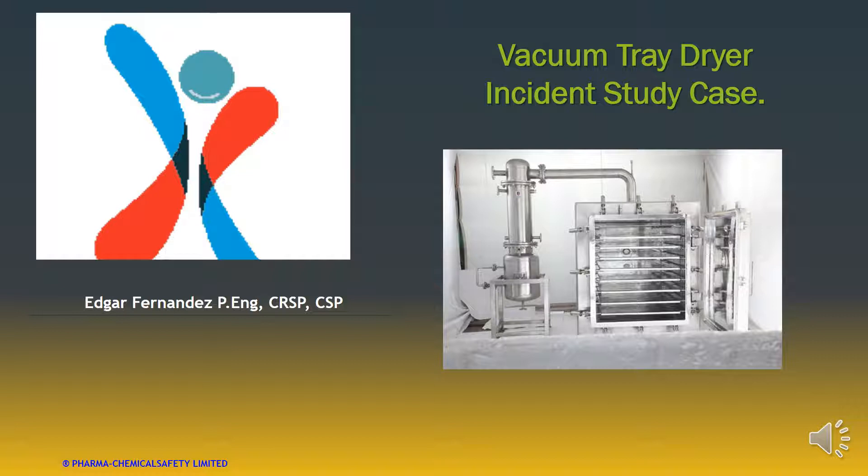In Canada, each province has its fire code. You need to check that. And most of these fire codes, I would say all of them, refer when you have furnaces and ovens that apply to these dryers to the NFPA 86. You should consult that standard.